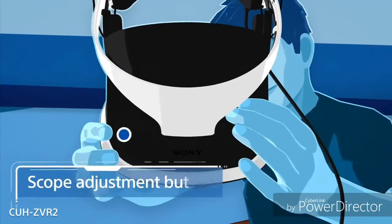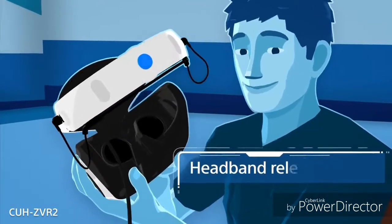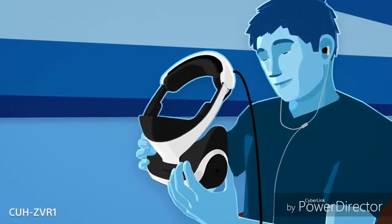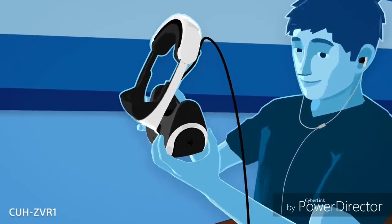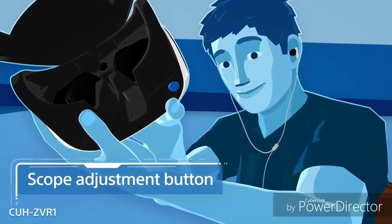The scope adjustment button, located on the scope's top right side, and the headband release button. If you have the CUH ZVR 1, the scope adjustment button is located under the scope on the bottom right side.